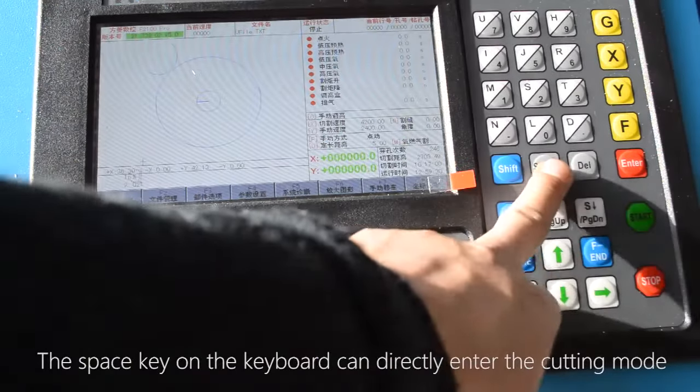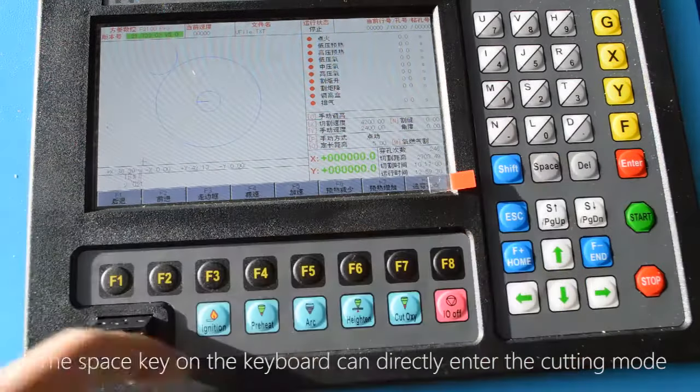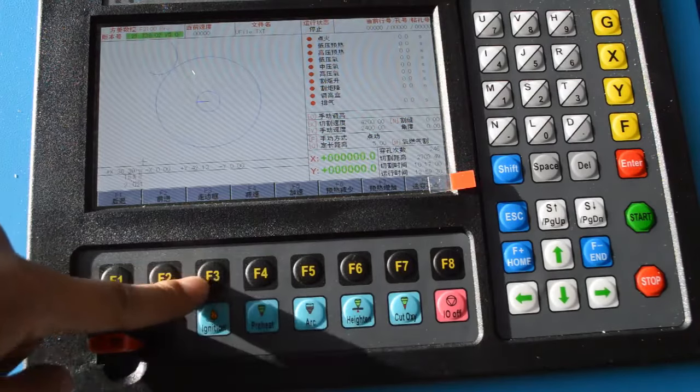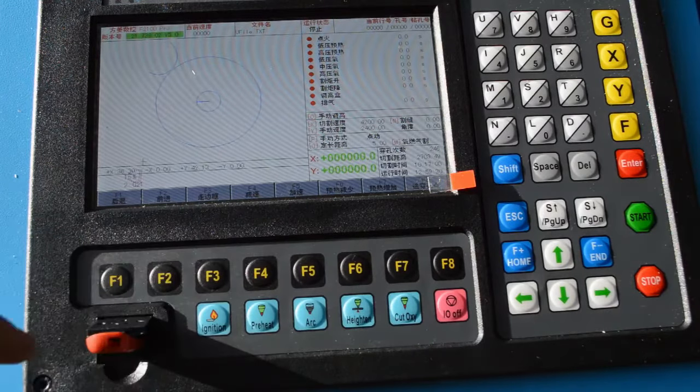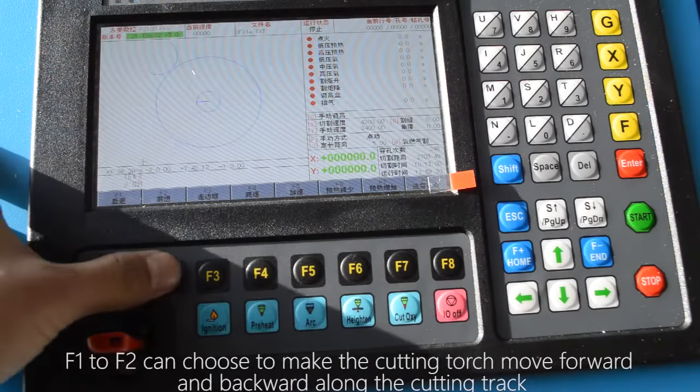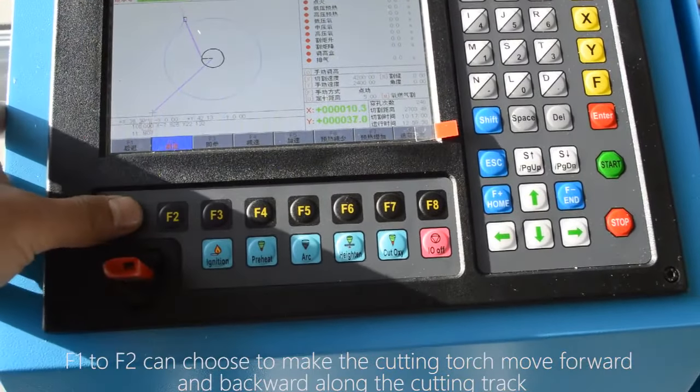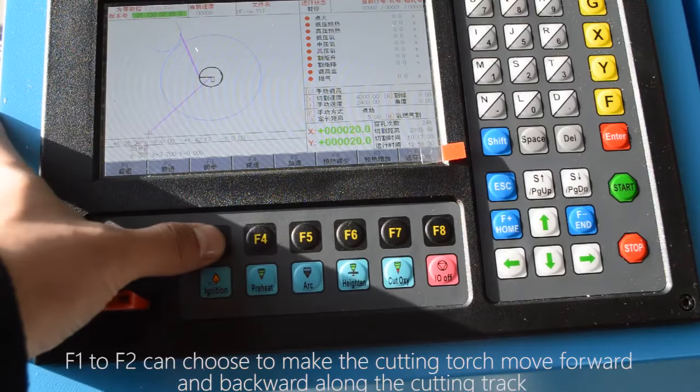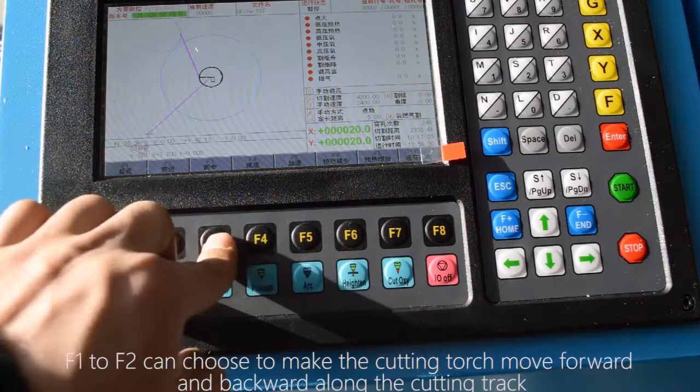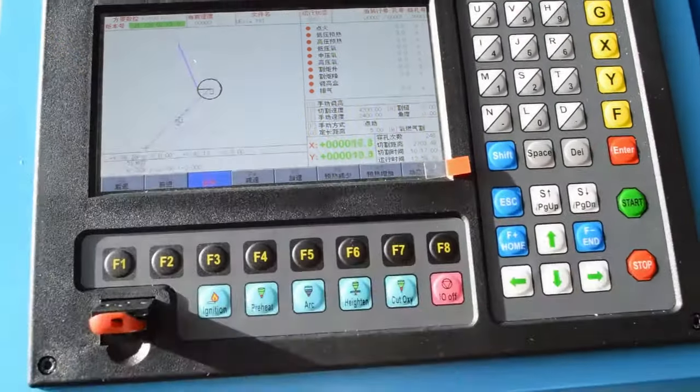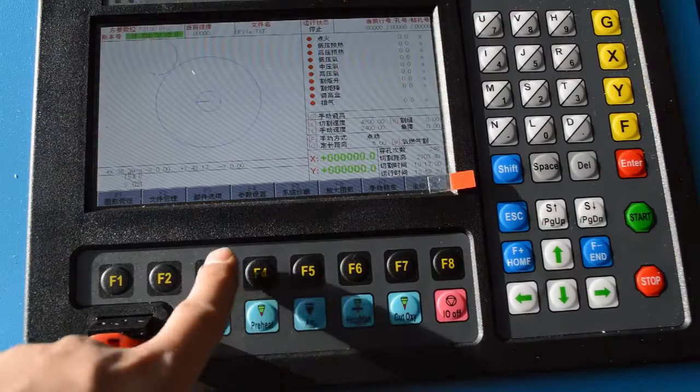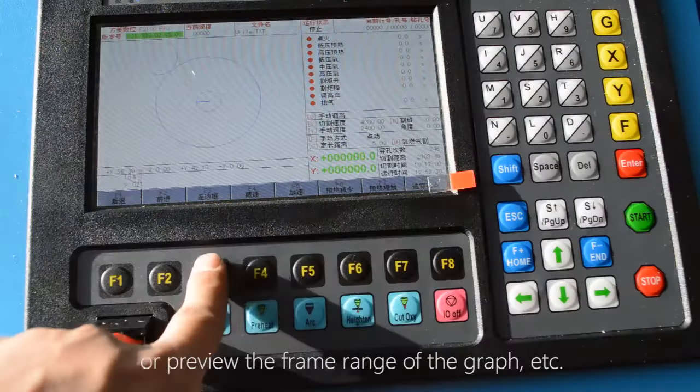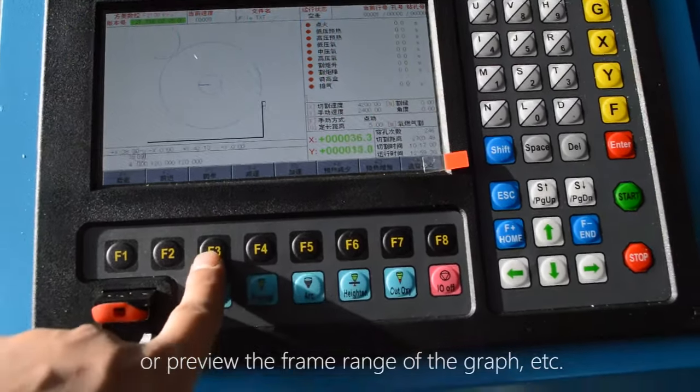The space key on the keyboard can directly enter the cutting mode. F1 to F2 can choose to make the cutting torch move forward and backward along the cutting track. Or preview the frame range of the graph.